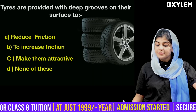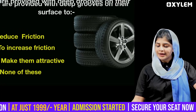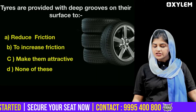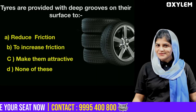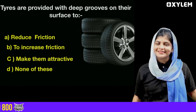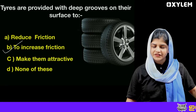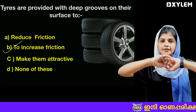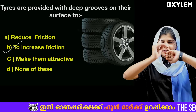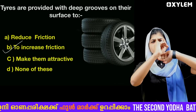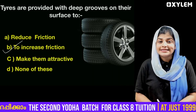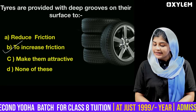Next question: Tires are provided with deep grooves on their surface. The options are: A) To reduce friction, B) To increase friction, C) To make them attractive, D) None of these. The answer is B — to increase the friction. Deep grooves increase friction, that's why we use them on tires.